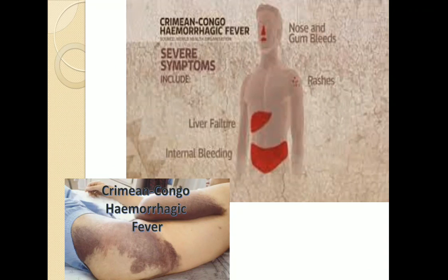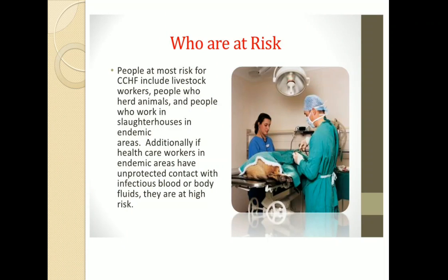Some organs affected by Crimean Congo hemorrhagic fever include nose and gum bleeding, rashes on the body, liver failure, and sometimes internal bleeding. People at most risk include livestock workers, people who herd animals, and people who work in slaughterhouses.